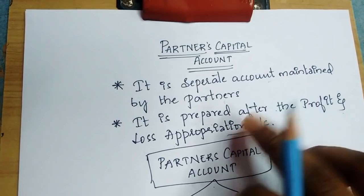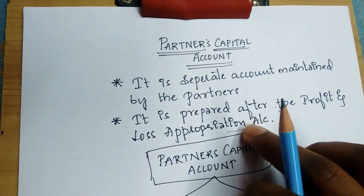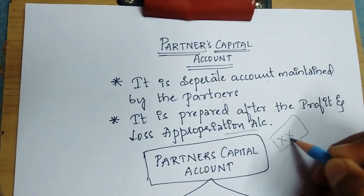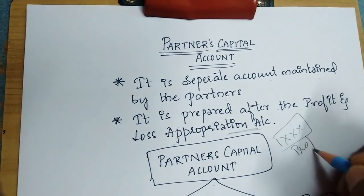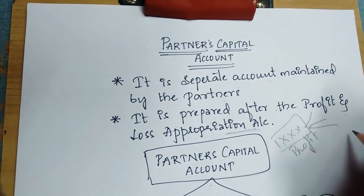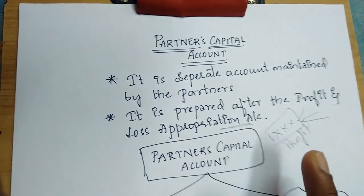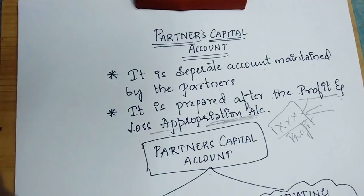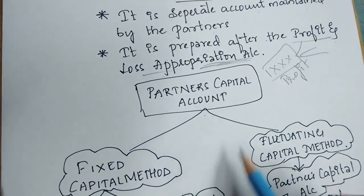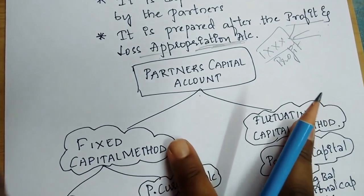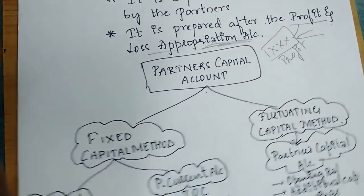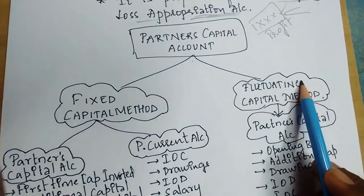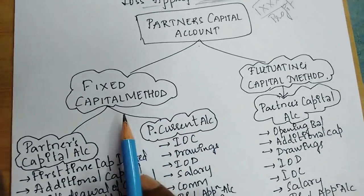The partner's capital account is prepared after the profit and loss appropriation account is prepared. Coming to the partner's capital account, there are two types: the fixed capital method and the fluctuating capital method.